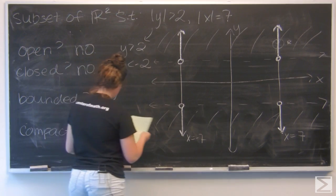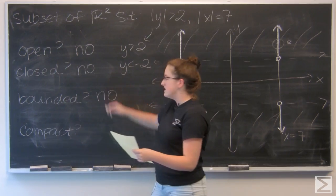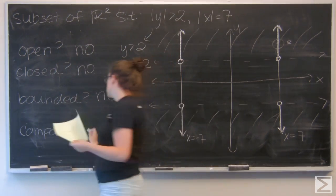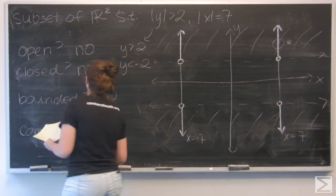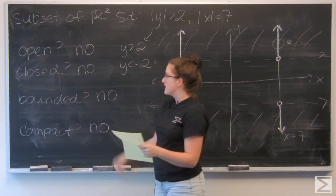And is it compact? A compact set is both closed and bounded. So since this set is neither, we can't consider it compact. So we're all finished. We have identified four things that this subset is not.